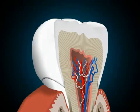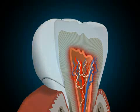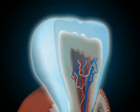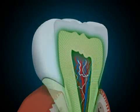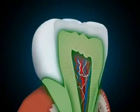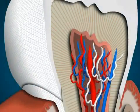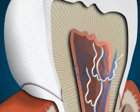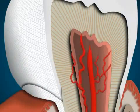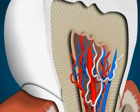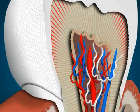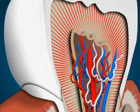A tooth consists of the dental pulp — in Latin 'pulpa', commonly called the tooth nerve — the dental enamel, and the dentin, another Latin term. The pulp consists of nerves, lymphatic vessels, connective tissue, and blood vessels. The dentin is interspersed with small tubules that are directly connected to the pulp.